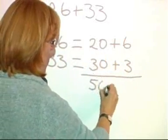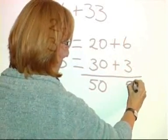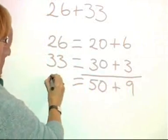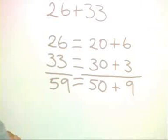20 and 30 add together to get 50. 6 and 3 add together to get 9. Add the 50 and the 9 together to get 59. Just as easy on paper as it is mentally.